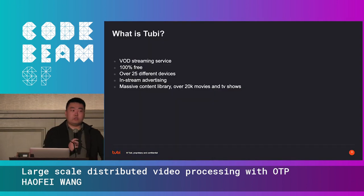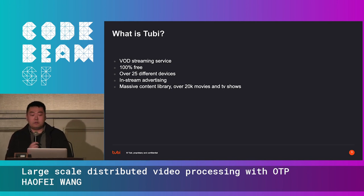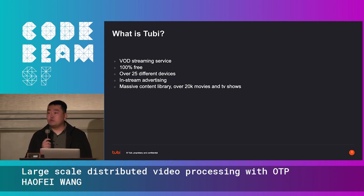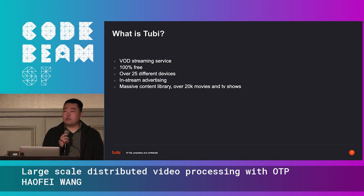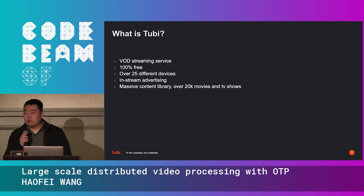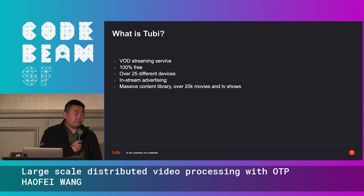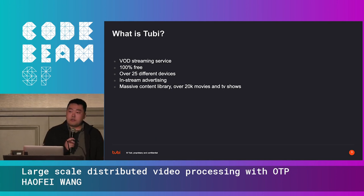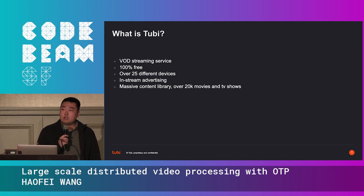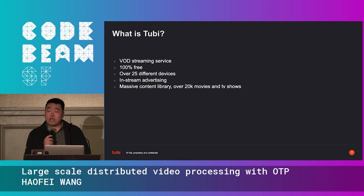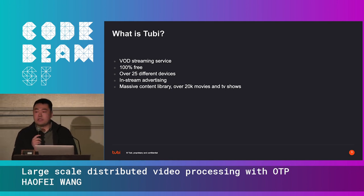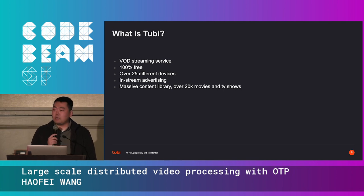I want to introduce Tubi to everyone. Tubi is a video streaming service, much like Netflix, Hulu, and Disney Plus. We support over 25 different devices. The big difference is that we are 100% free — no subscription, no credit card at all. We also have a massive content library: over 20,000 movies and TV shows live on our site. We make money by running video ads.